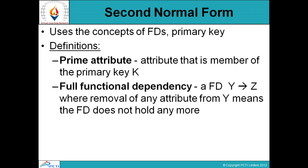In the second normal form, data must first pass through first normal form. It uses the concept of functional dependencies and the primary key. Every table should contain a primary key. If you create the primary key on a particular column of the table, it stops duplicacy, since the primary key contains a unique value.